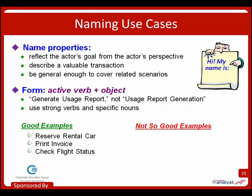Good examples of use case names include: reserve a rental car, print an invoice, check flight status. Not-so-good examples use weak generic verbs like 'enter' — entering a PIN doesn't represent a goal; no one would go to an ATM, enter their PIN, and walk away satisfied. That's just a step in a use case like withdrawing cash. 'Submit form 37' is too narrow — if you have 80 forms you don't want 80 use cases doing basically the same thing. 'Process' is another weak verb. Look for strong, specific verbs and precise nouns so as not to be too vague.